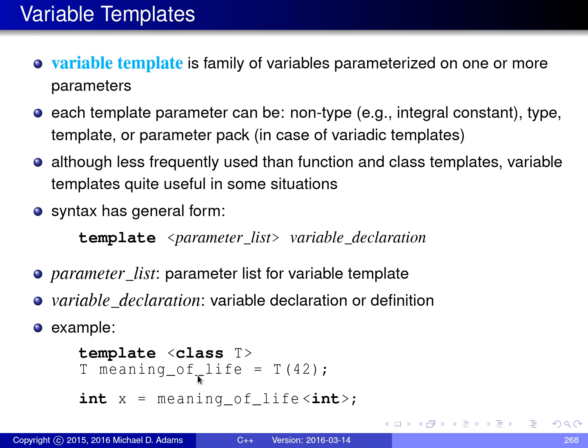And then we have our actual variable definition here. We have a variable called meaning_of_life, and it's initialized to 42 converted to whatever T is.